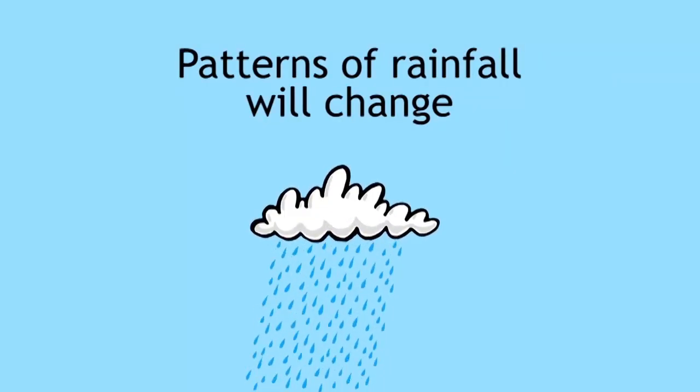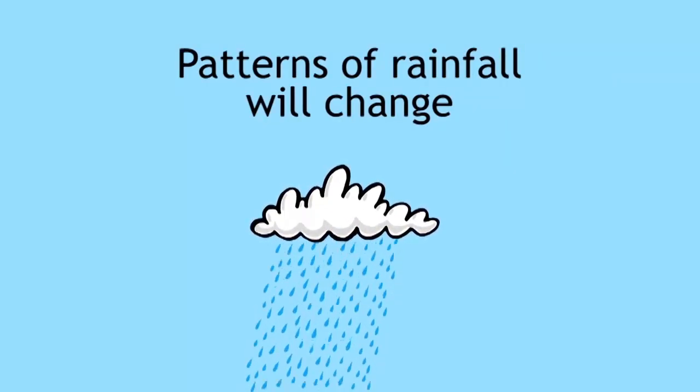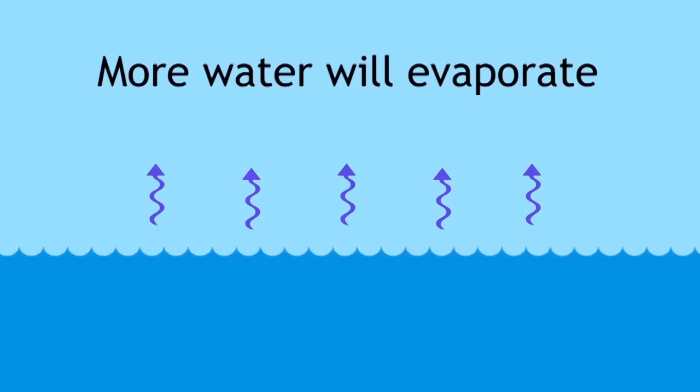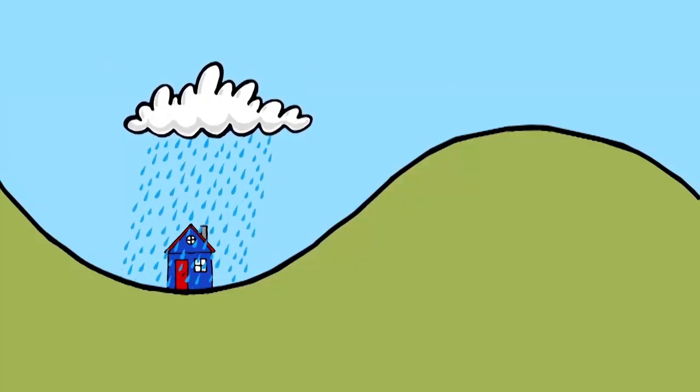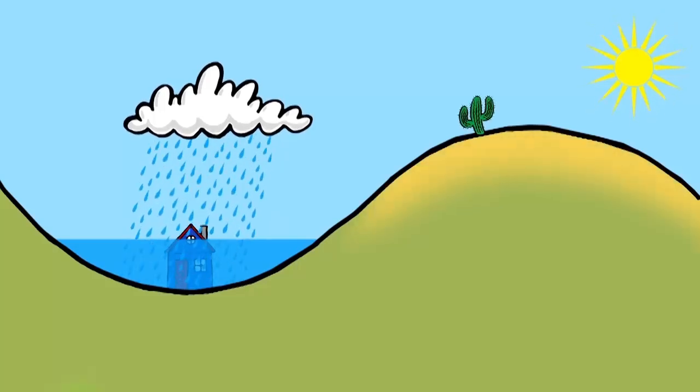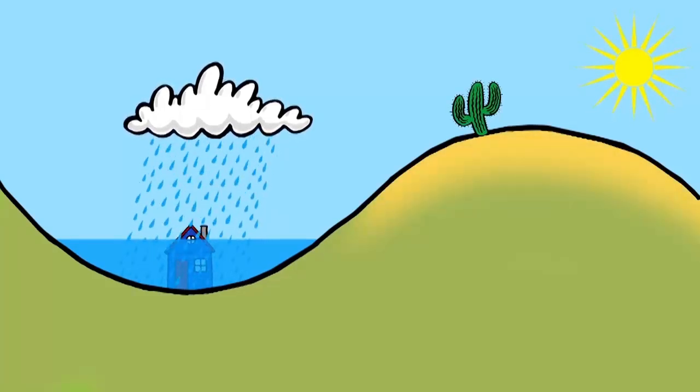Patterns of rainfall will also change. Although a hotter world would have more water evaporated from the seas, this water may not rain down as it does at present. Some places will undoubtedly have more rain causing flooding, whereas others may have less rain causing droughts.